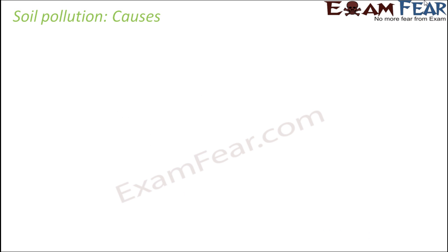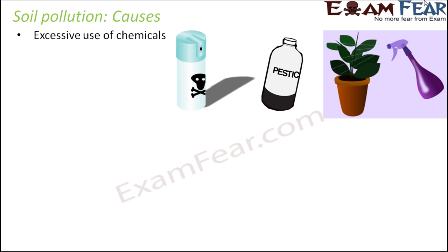Let us quickly look at the causes of soil pollution. First of all, excessive use of chemicals. In order to increase crop productivity and yield, we make use of a lot of chemicals — insecticides, pesticides, fertilizers, etc. — so that more productivity happens.